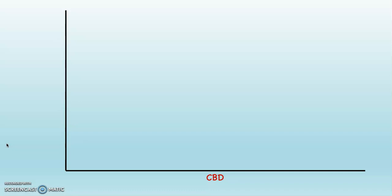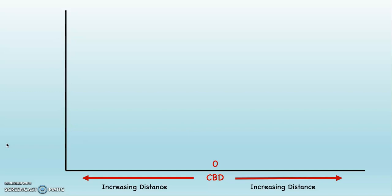Now we have a graph. You can see there are vertical and horizontal components. Down at the bottom, in the middle of the horizontal component, we have the CBD, the Central Business District. I put the number zero above CBD, which means the very center of the city — zero miles away. Along the bottom, you can see increasing distance going left and right. This is a 2D graph in a 3D world, so in reality we'd go out in all directions from the CBD. On the left-hand side, the vertical axis shows value of property — how much does land cost? As you go higher on this graph, property value increases.